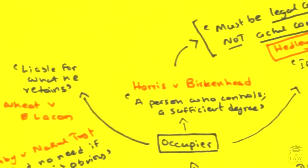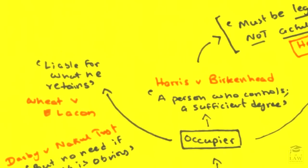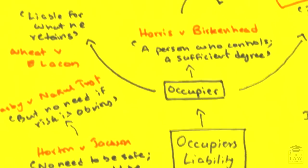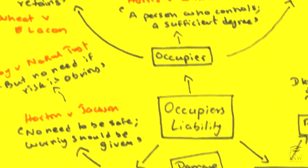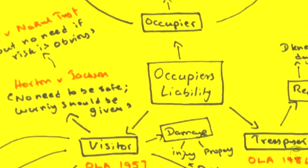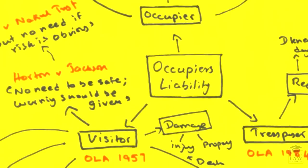Before we move on, we need to consider that if the owner is unaware of whatever danger lies with his property, he cannot be held liable, as was held in the relevant case authorities.